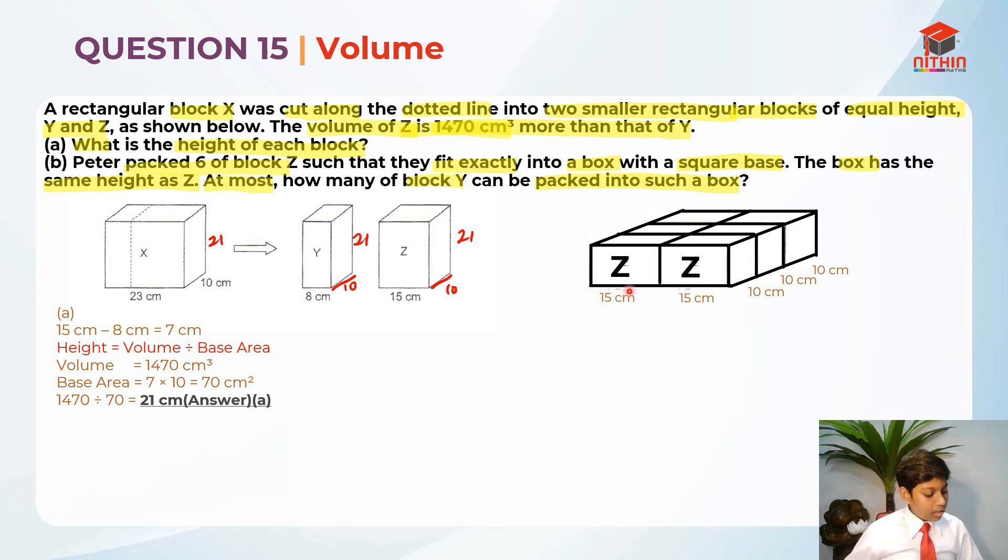So 15 cm over here, 15 cm over here. And this 10 cm, 10 cm, 10 cm add up to 30 cm and 15 plus 15 add up to 30 cm. So basically both of them are equal lengths. So a square base is true now. So they are asking us, the box has the same height as Z right? So basically it's 21 cm.